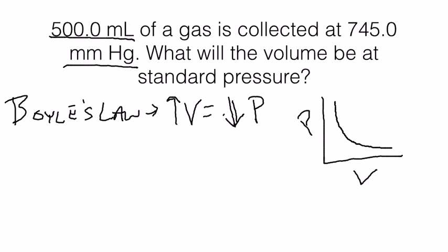So let's look at this problem and apply a little logic to it. We had 500 milliliters of a gas collected at 745 millimeters mercury. What will the volume be at standard pressure? The first thing we need to know is what standard pressure is, and we need to convert 745 millimeters mercury into atmospheres. Our formula for this, P1 times V1 is equal to P2 times V2.